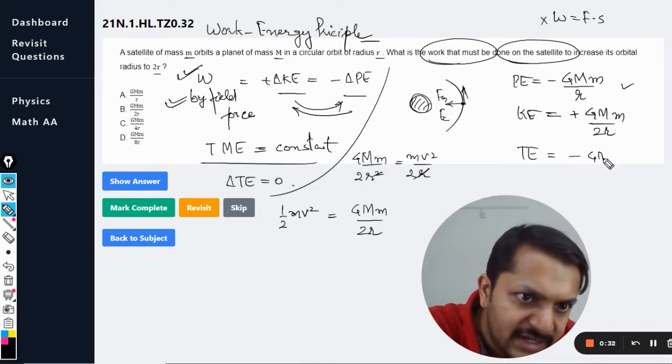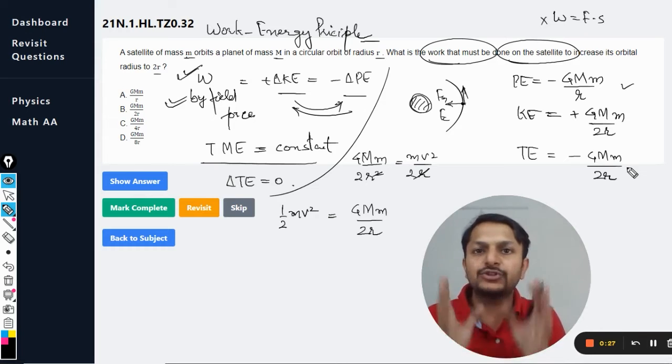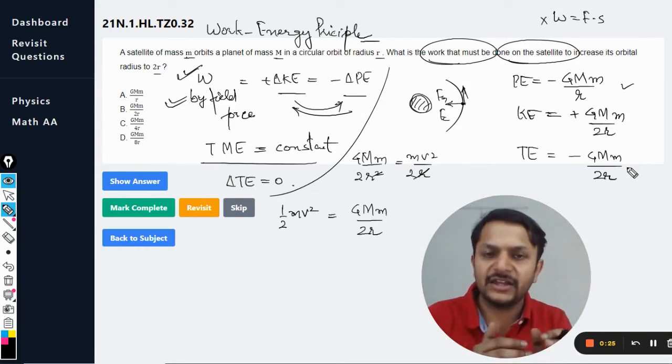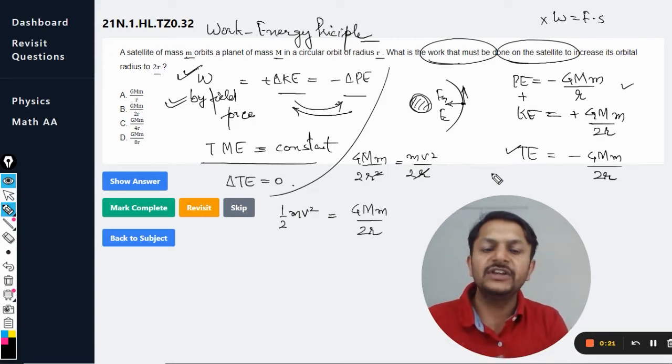When you add these two, the formula becomes minus GMm divided by 2r. You are just adding the potential energy and the kinetic energy.